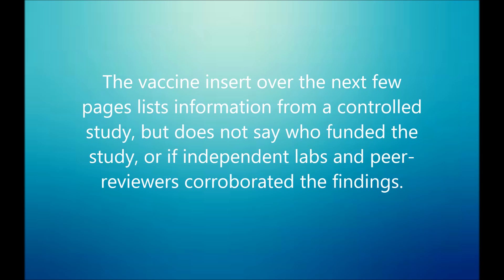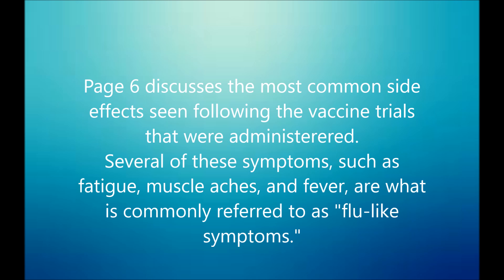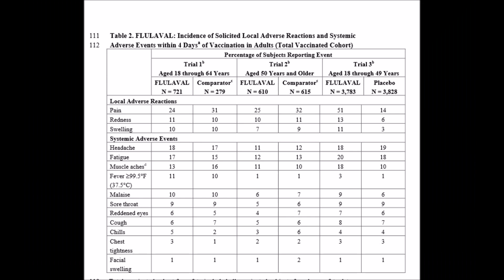Over the next few pages, the vaccine insert lists information from a controlled study, but it doesn't say who funded the study or if independent labs and peer reviewers corroborated the findings. There were three steps to the randomized controlled study, completed using flu label, a competitor flu zone, and a placebo injection. Page six discusses the most common side effects seen following the vaccine trials. Several of these symptoms — such as fatigue, muscle aches, and fever — are what is commonly referred to as flu-like symptoms. Here is a quick snapshot showing those side effects listed.